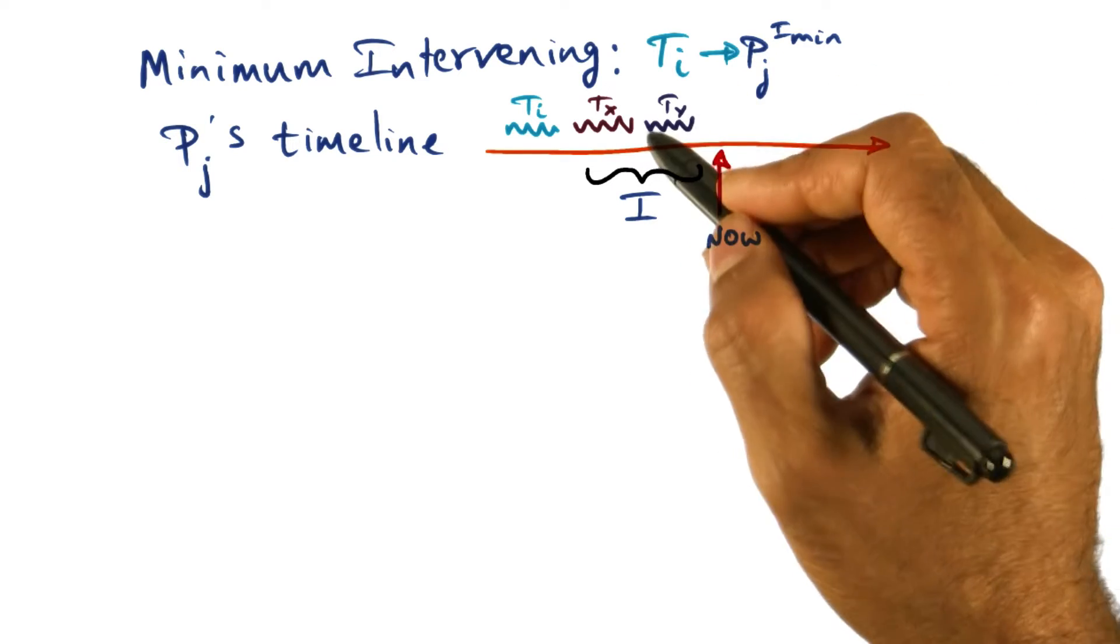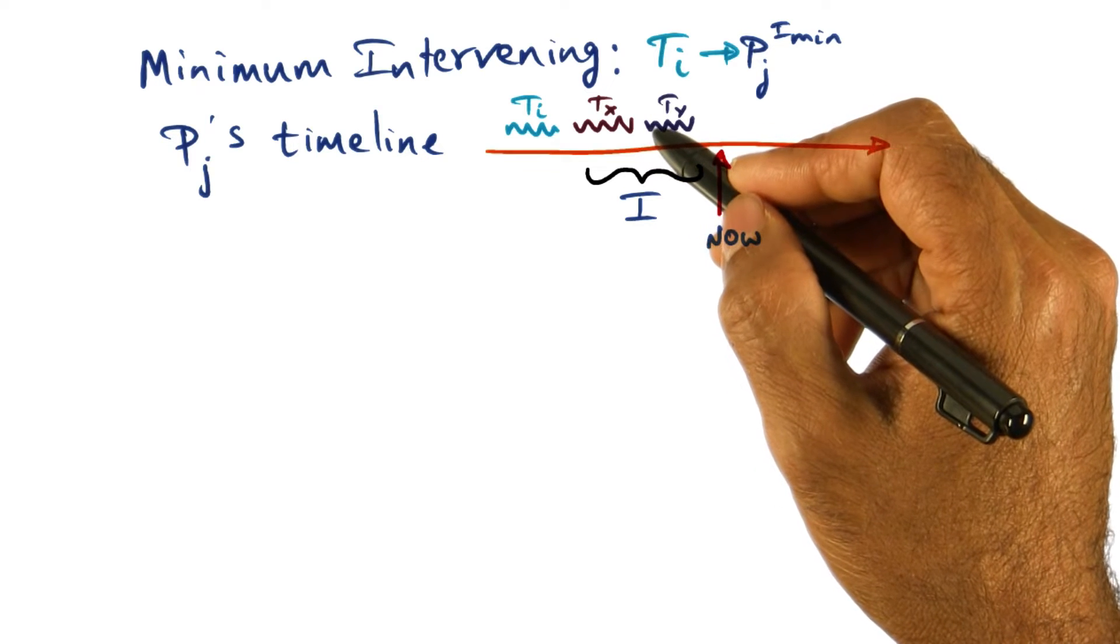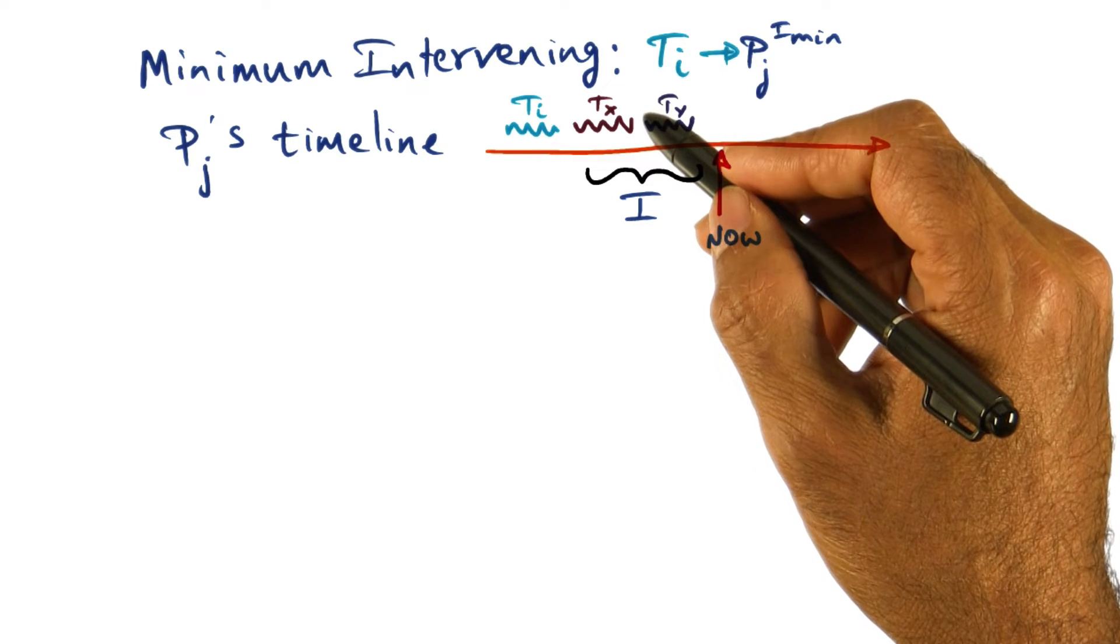And so clearly, this number that I'm talking about, the affinity number, the smaller the number, the higher the affinity.